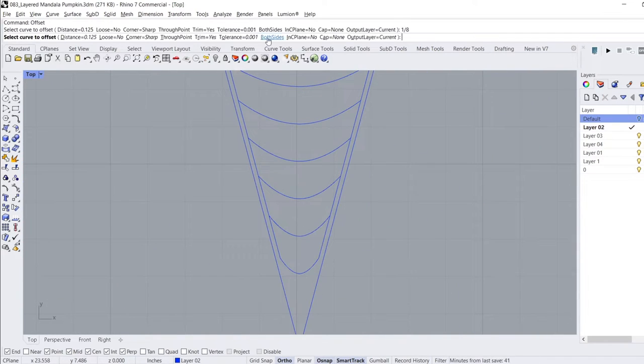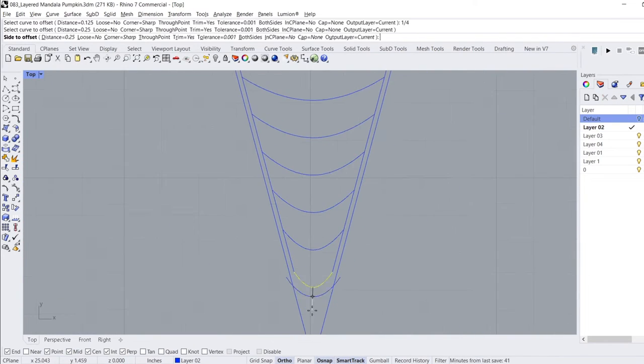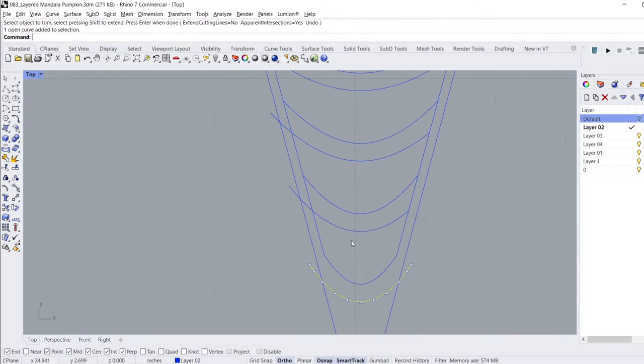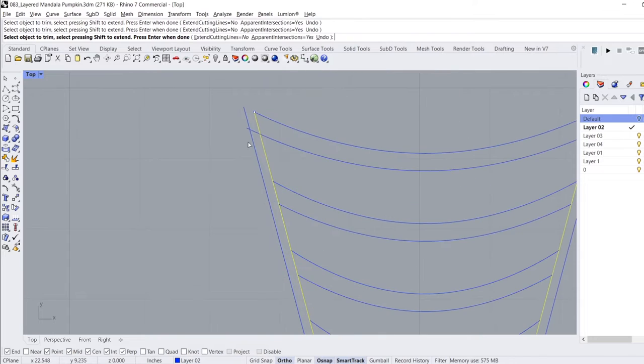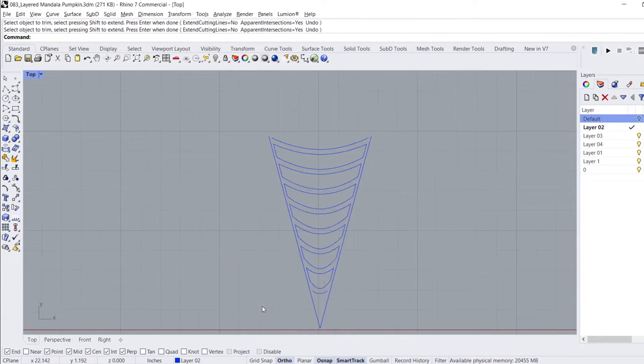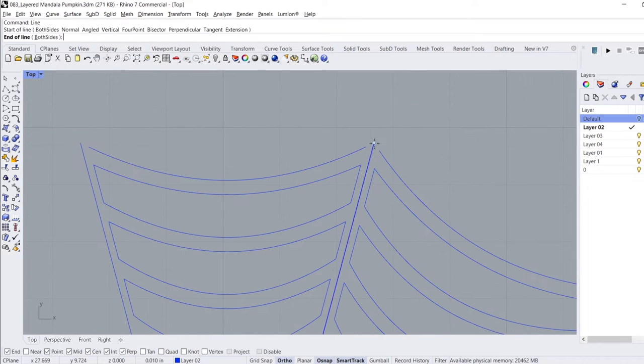With the curves complete, I offset each of them in the same direction by one-quarter of an inch to give them thickness. I offset the guide lines by one-eighth of an inch and used the trim command to clean up the shapes. Using the mirror command, I duplicated the shapes around a circle to create the web.